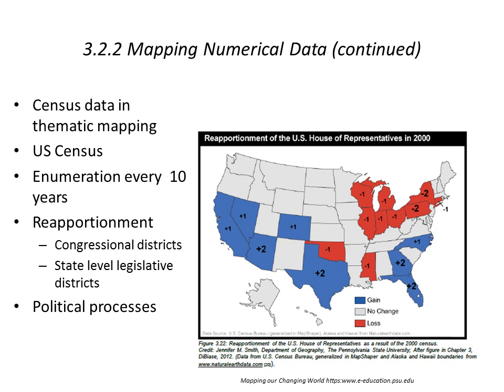The U.S. Census plays an important role in the data we use for thematic mapping. The census is enumerated every 10 years, and its results are used to determine the number of congressional seats in the U.S. House of Representatives, which is fixed at 435 and shifted to various states depending on population changes. Mapping is a highly political process, and you'll be well aware of its importance in terms of the U.S. political system if you pay attention to the news.